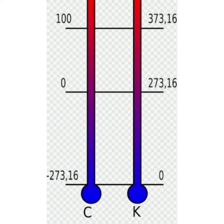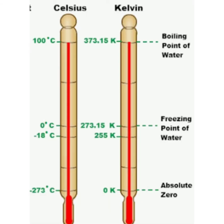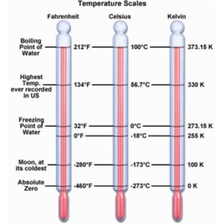The next scale is Kelvin. Kelvin is often used in science and technology. This Kelvin scale was introduced by Lord Kelvin. In the Kelvin scale, the freezing point of water is defined as 273.16 Kelvin and the boiling point is 373.16 Kelvin. The size of one Kelvin is the same as the size of one Celsius degree. These are the three types of scales used to measure temperature: Fahrenheit, Celsius, and Kelvin.